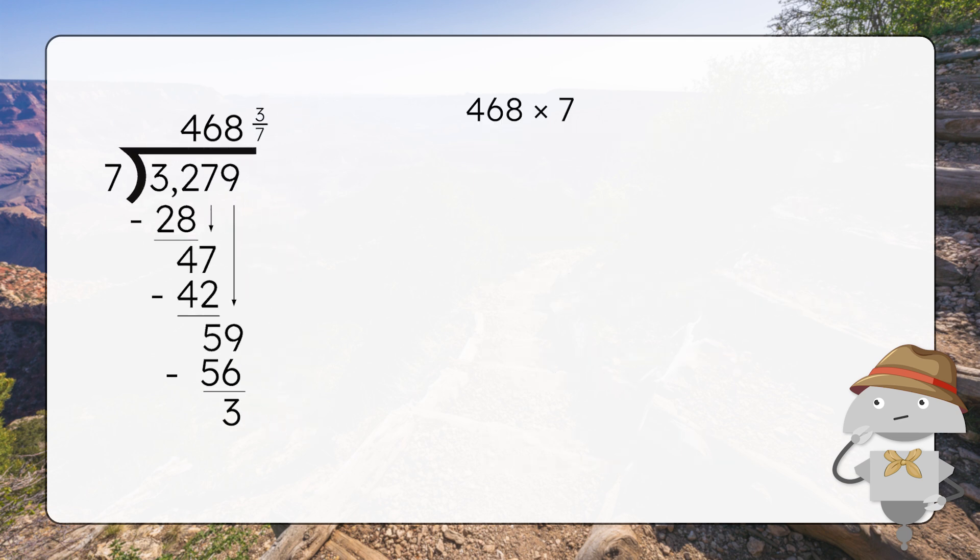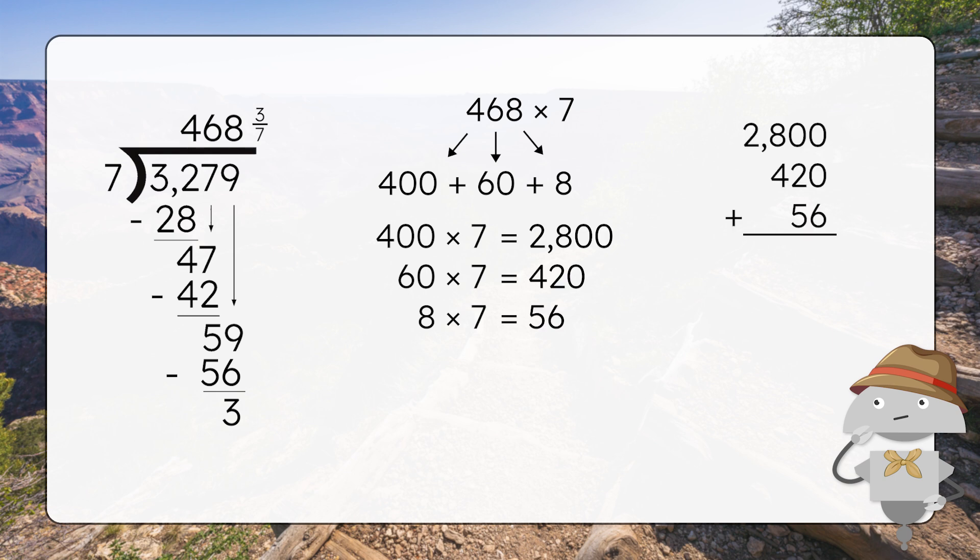I used partial products to check my answer by expanding 468 into 400 plus 60 plus 8. And then multiplying each part by 7. Once I had my answers, I added them together and I got a product of 3,276. Finally, I added that remainder of 3 and got my final answer, 3,279. Just like the dividend we started with. Using multiplication to check your work is a great strategy if you aren't sure of your answer, if your remainder is larger than your divisor, or if you just want to make sure your answer is reasonable.